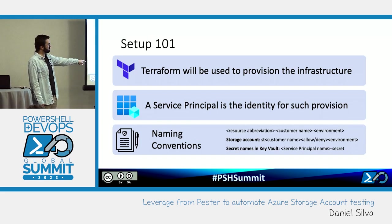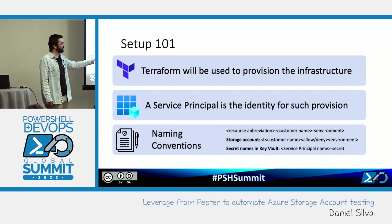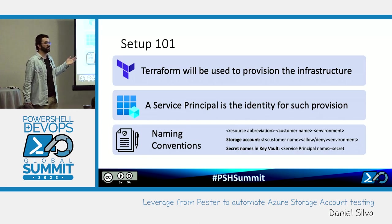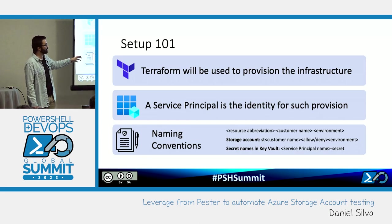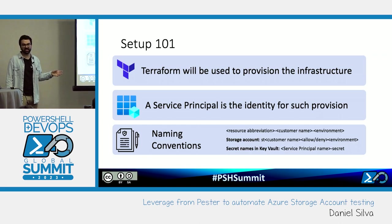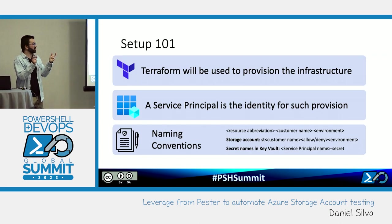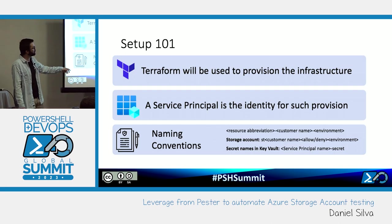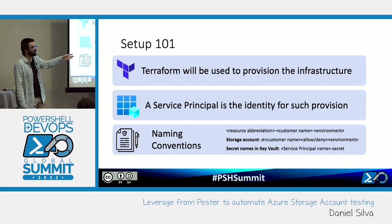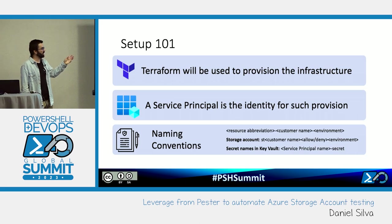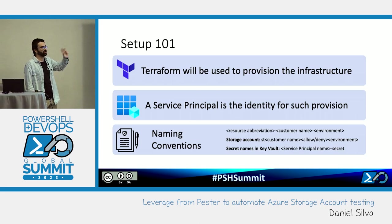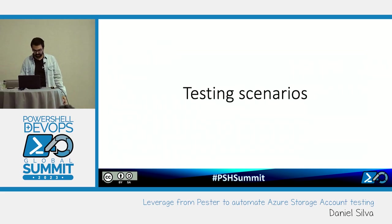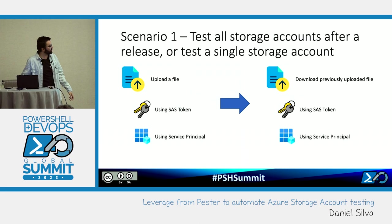I'm leveraging naming conventions, mostly for the demo but I apply this in daily work too. By using naming conventions with variables I just need to change the customer name and the rest works as expected. The testing scenarios we'll be running are essentially three but in two categories: one tests all storage accounts after a release, and another checks things like SAS token validity and service principal permissions at scale.